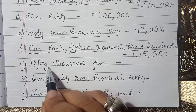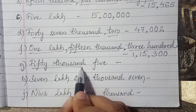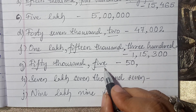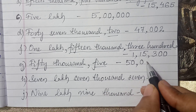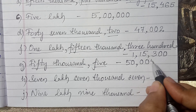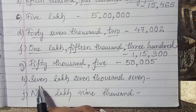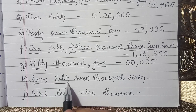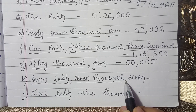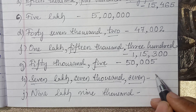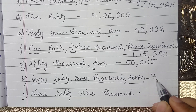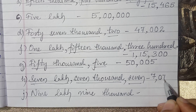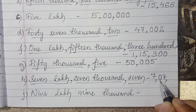Similarly, 50,005: write 50,000 comma 5. There is nothing in the hundreds place, nothing in the tens place — only 5 in the ones place. Next is 7 lakh 7,007: write 7 lakh comma, 7,000 comma, 7. There is nothing in the hundreds and tens places, only 7 in the ones place.